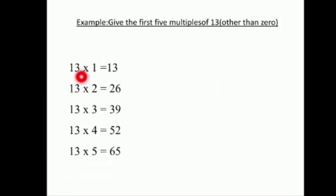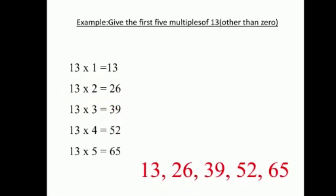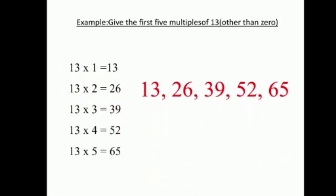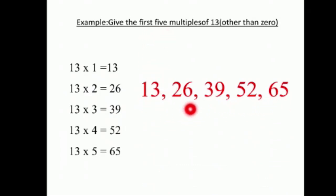معناته بدي أبلش عند thirty-two times one. Thirty-two times two = sixty-four, thirty-two times three, thirty-two times five. معناته هودا للـ thirty-two، أنا بدي بس أول five multiples: الأولى، التانية، التالتة، الرابعة، والخامسة.